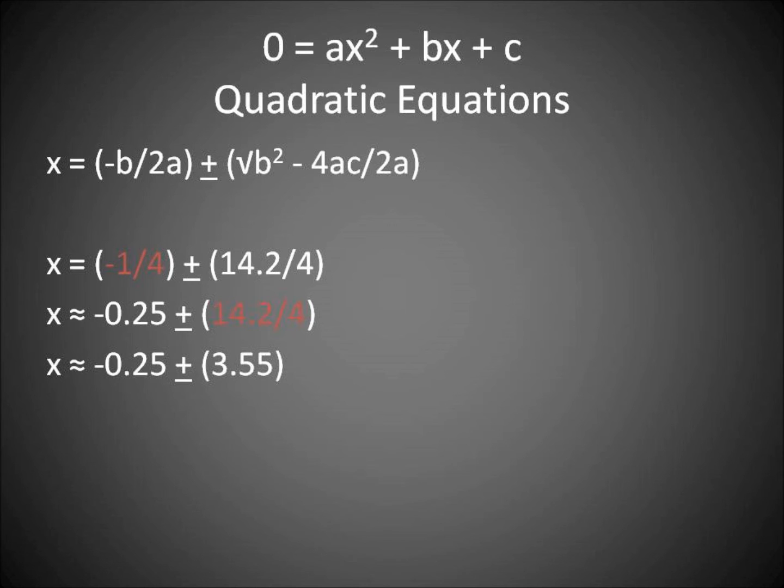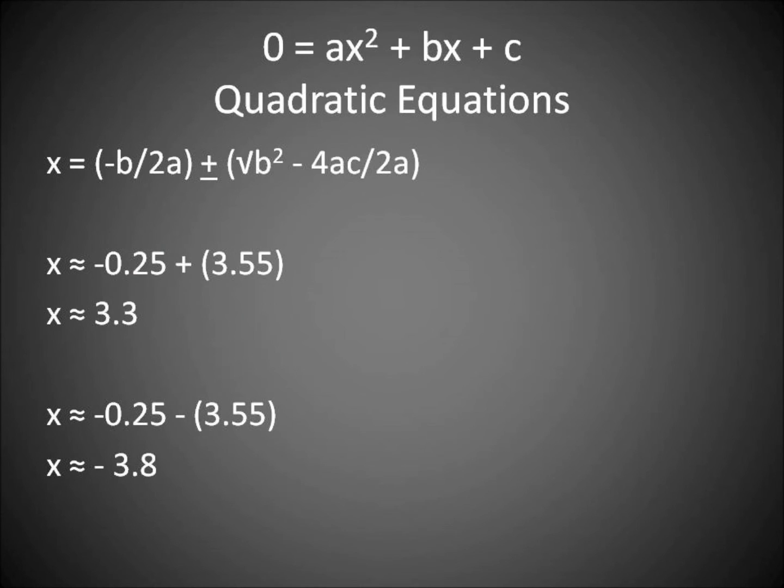When we break it up into two answers, we have negative 0.25 plus 3.55, which is about 3.3, or about negative 0.25 minus 3.55, which is about negative 3.8.